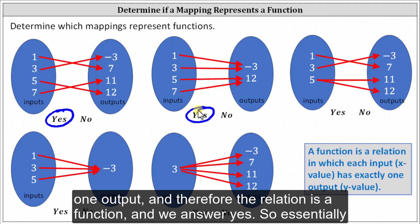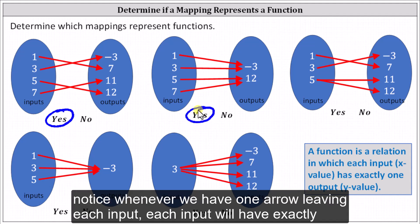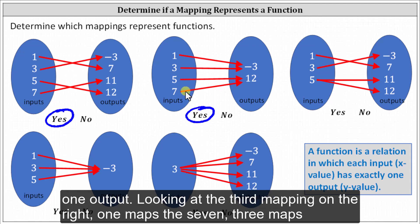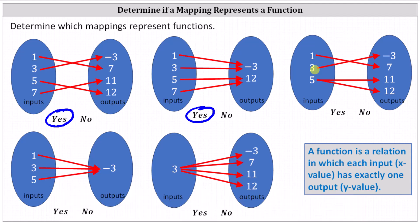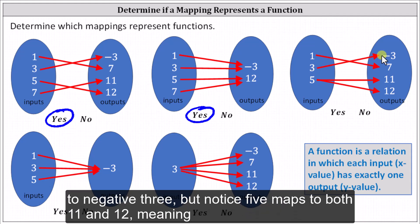So essentially, notice whenever we have one arrow leaving each input, each input will have exactly one output. Looking at the third mapping on the right, one maps to seven and three maps to negative three.